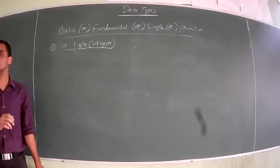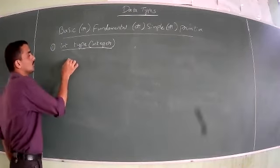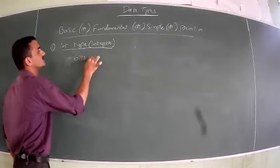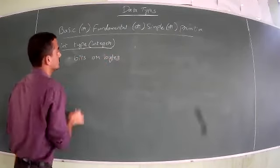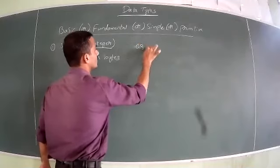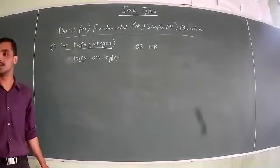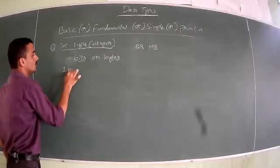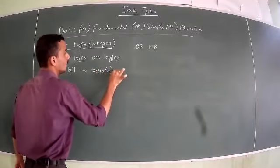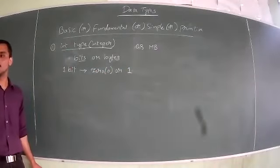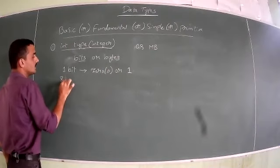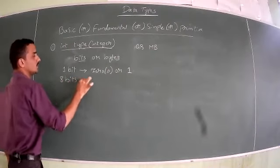Let us have some background knowledge. Computer memory is made up of bits. One bit can store either 0 or 1 in terms of computer language. Eight such bits make 1 byte.